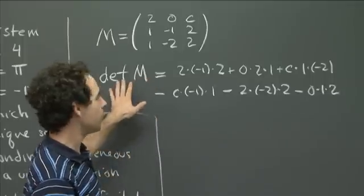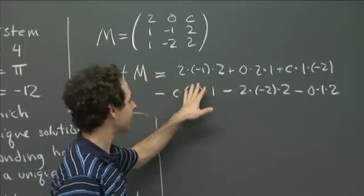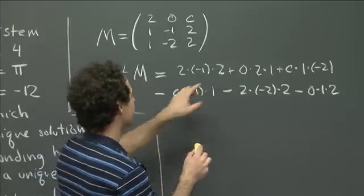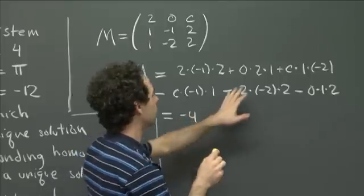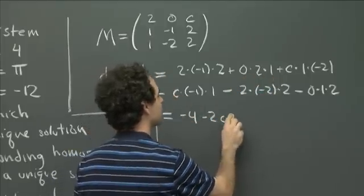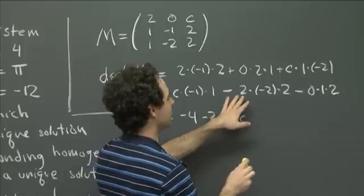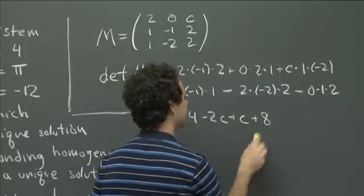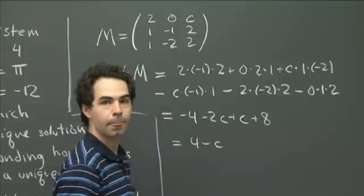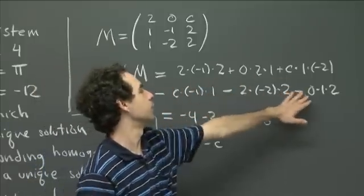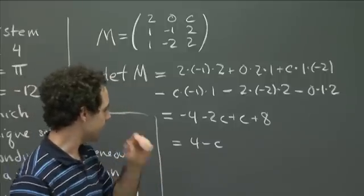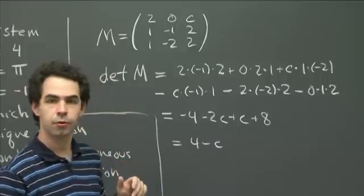Simplifying: that's minus 4 plus 0 minus 2c, then minus minus c giving plus c, then minus minus 8 giving plus 8. The two zero terms drop out, so the determinant of M equals 4 minus c.